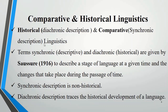These two terms — synchronic and diachronic — were given by Saussure in 1916 to describe a stage of language at a given time and the changes that take place during the passage of time. Synchronic description is non-historical, whereas diachronic description traces the historical development of language.